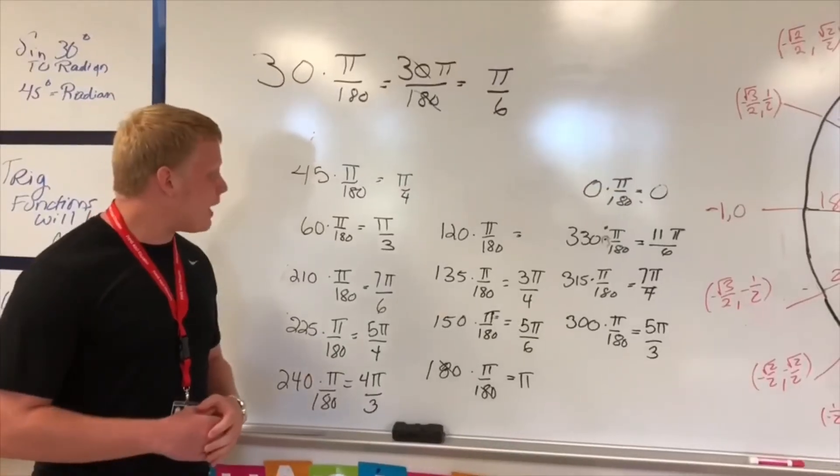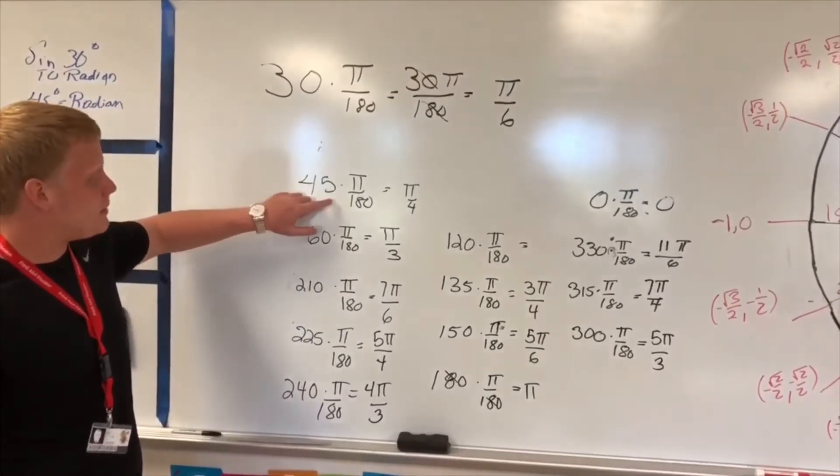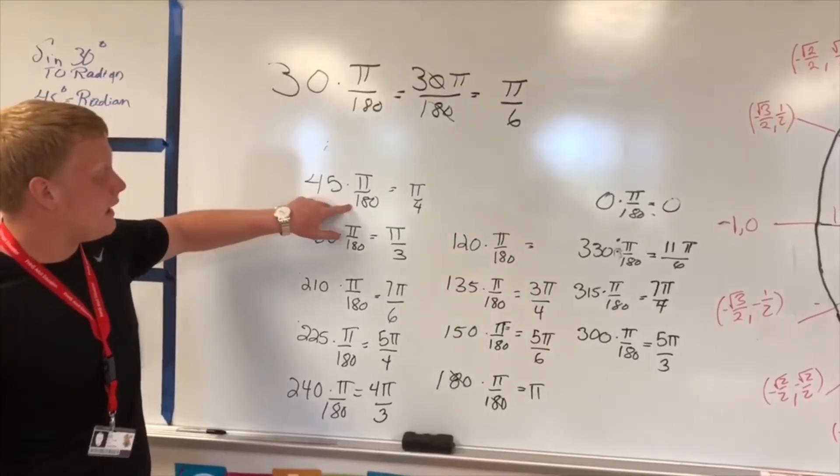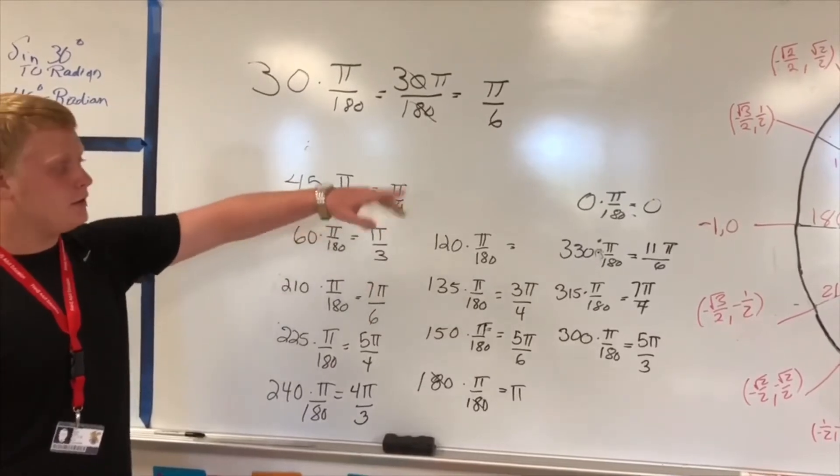Hey guys, it's Asher back with another one. So, what you do here is you have the degrees. And then you times them by π over 180. And then you simplify. And then you do that with all the degrees. And that's how you get the radians on the unit circle.